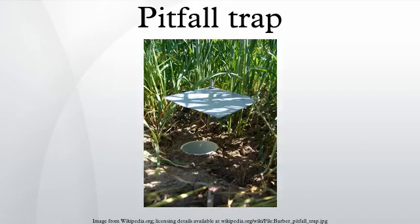Structure and composition: pitfall traps come in a variety of sizes and designs. They come in two main forms: dry and wet pitfall traps. Dry pitfall traps consist of a container buried in the ground with its rim at surface level, used to trap mobile animals that fall into it. Wet pitfall traps are basically the same, but contain a solution designed to kill and preserve the trapped animals.